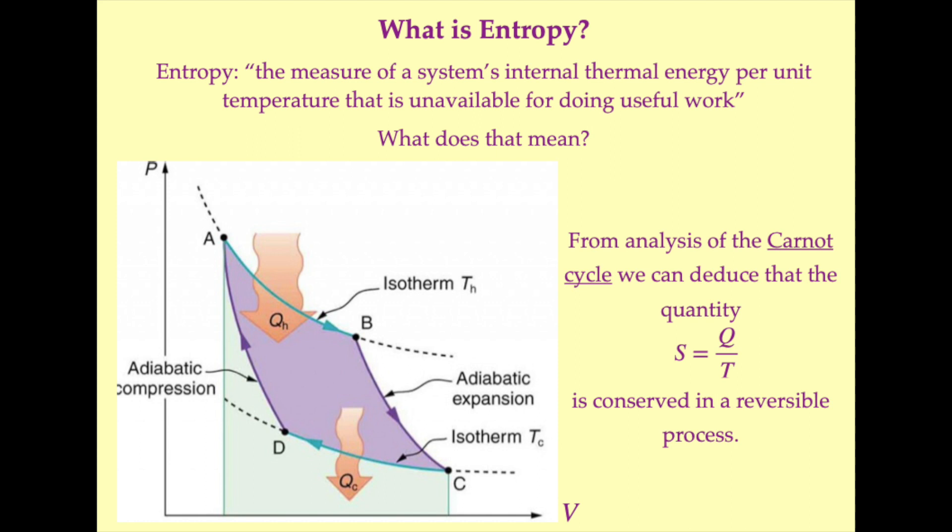By analyzing the properties of a gas packet as it moves through a Carnot cycle, Clausius was able to determine that the ability of the gas packet to do work was reduced by a constant multiple of the temperature of the gas packet. He also noted that any inefficiency in the Carnot cycle would only act to reduce the ability of the gas packet to do work. Based on these observations, Clausius defined entropy as the measure of a system's internal thermal energy per unit temperature that is unavailable for doing useful work.